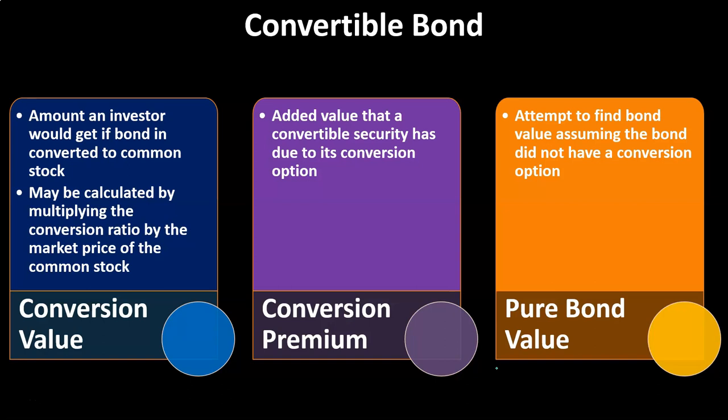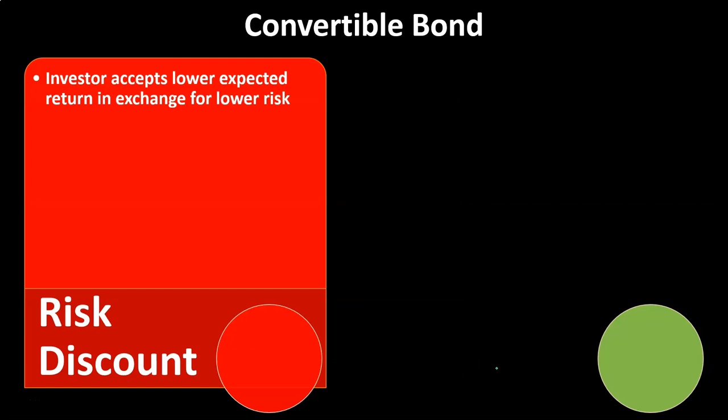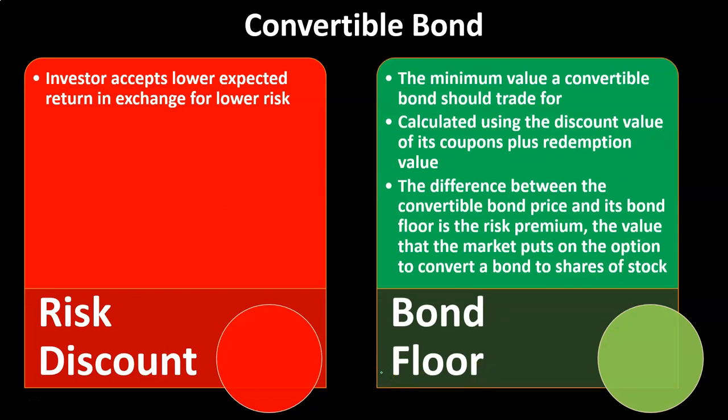If we're looking at stocks actually trading on the market, we have the risk discount — the investor accepts a lower expected return in exchange for lower risk. Because the risk goes down with convertible bonds, investors would accept lower interest payments, which allows the issuer to benefit. The bond floor is the minimum value a convertible bond should trade for, calculated using the discounted value of its coupons plus the redemption value. The difference between the convertible bond price and its bond floor is the risk premium — the value the market puts on the option to convert a bond to shares of stock.